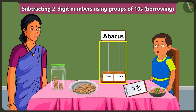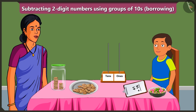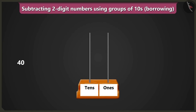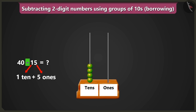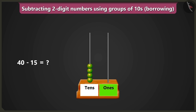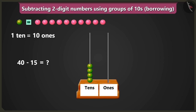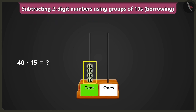Subtracting by borrowing with the help of Abacus — how can we do that? Come on, let me explain. We have to subtract fifteen from forty. So, if we put four beads in the box of tens, then it will be four tens, meaning forty. Now, we have to subtract one ten and five ones from these. But there are no beads in the box of ones. So how will we subtract fifteen from forty? We know that one ten means ten ones. So, we will borrow one ten from four tens in the box of tens.